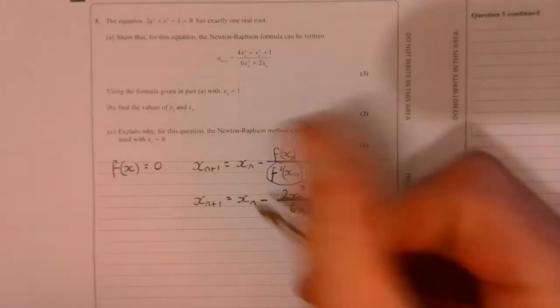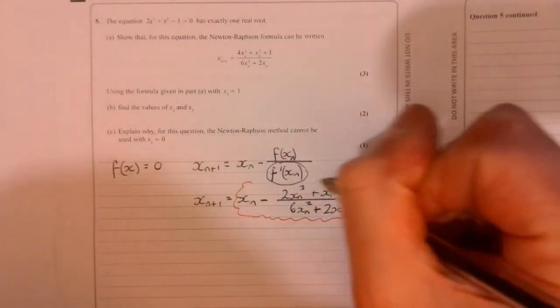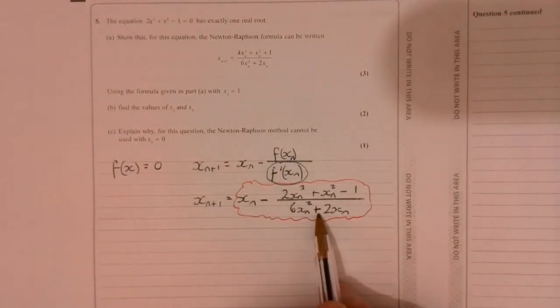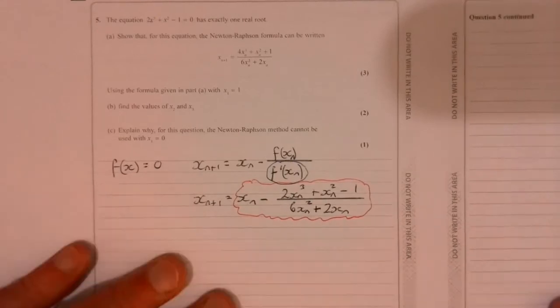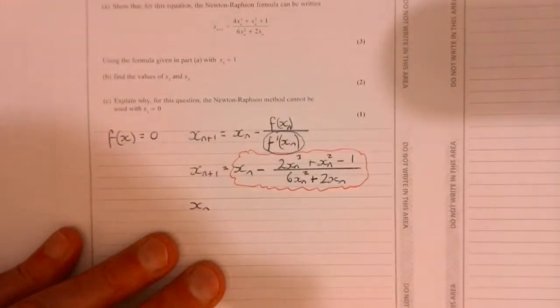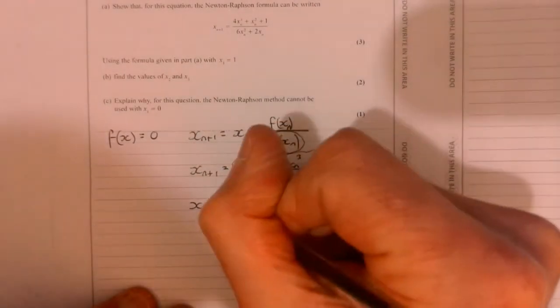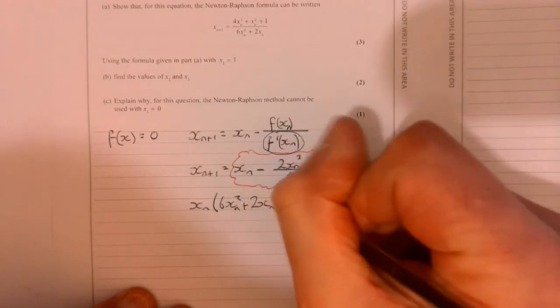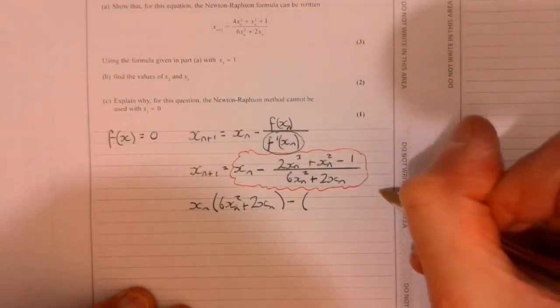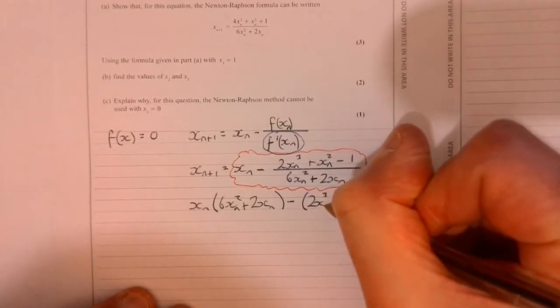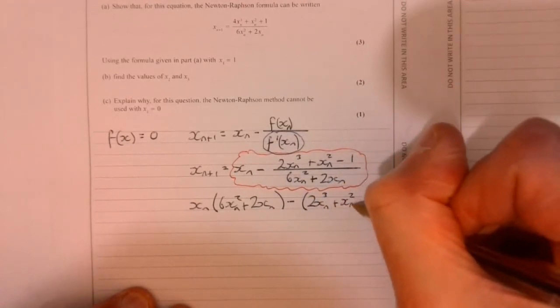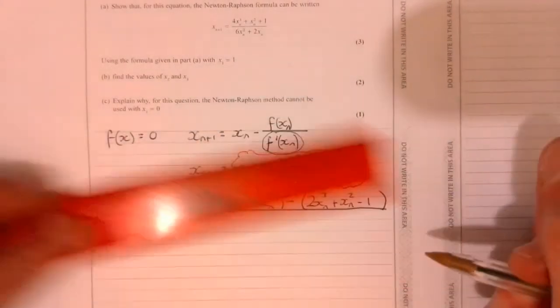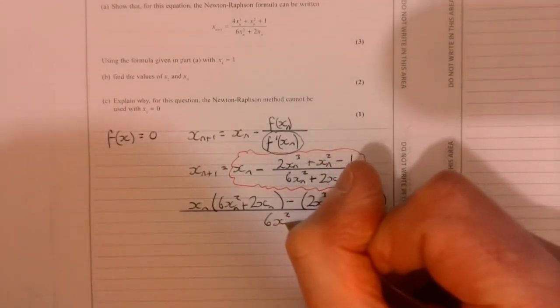So what we need to do now is we need to combine this into one fraction. So math trick, we're just going to multiply this by the denominator here, top and bottom. And then we end up with this. So I'm going to multiply this part, top and bottom by 6x² + 2x. And we've got to take away just what we had before. Let's just quickly write that in. There we are. And now it's all over one common denominator.